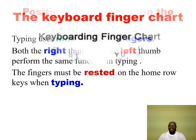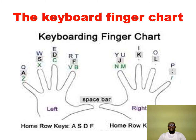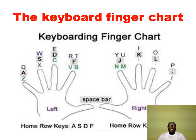This is the keyboard finger chart. It shows the various keys — Q, A, Z, W, X, and others — and the fingers that are used to press them during the typing process. The two thumbs press the space bar. You can see the home row keys for the left hand and the right hand.